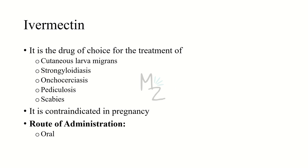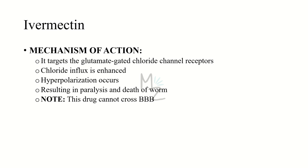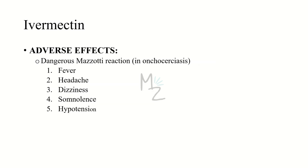Let's talk about ivermectin. It is the drug of choice for the treatment of cutaneous larva migrans, strongyloidiasis, pediculosis, and scabies. It is contraindicated in pregnancy and its route of administration is oral. Mechanism of action: ivermectin targets the glutamate-gated chloride channel receptors; chloride influx is enhanced and hyperpolarization occurs, resulting in paralysis and death of the worm. The drug does not readily cross the blood-brain barrier. Adverse effects: killing of microfilaria in onchocerciasis can result in dangerous Mazzotti reactions including fever, headache, dizziness, somnolence, and hypotension.